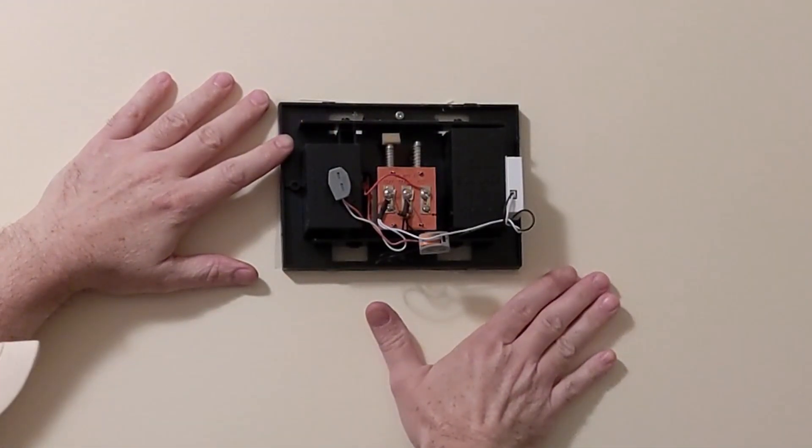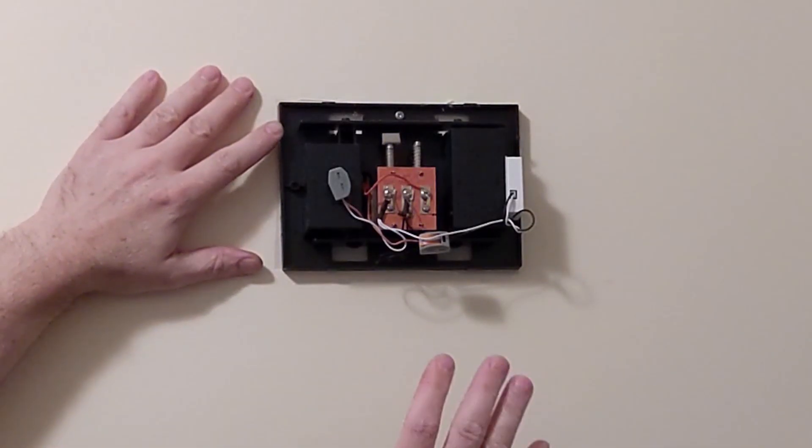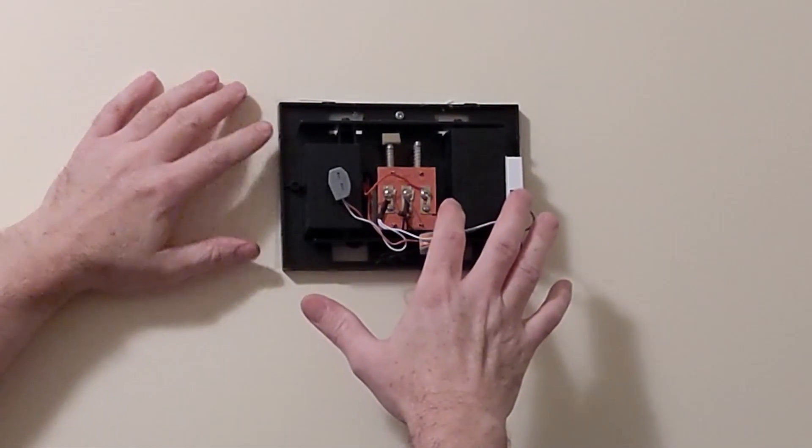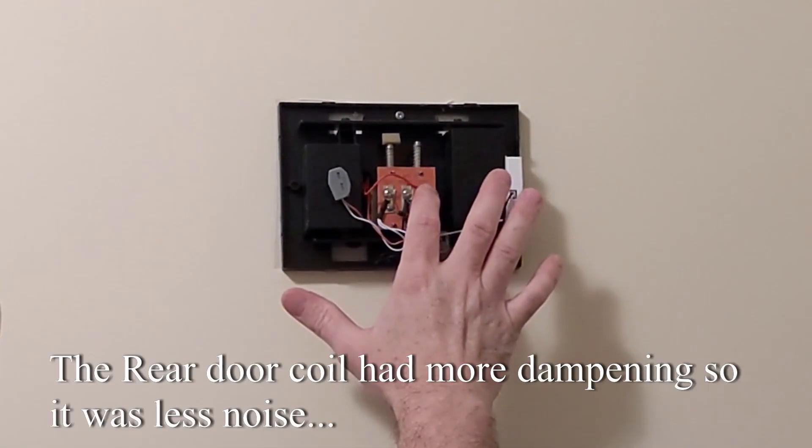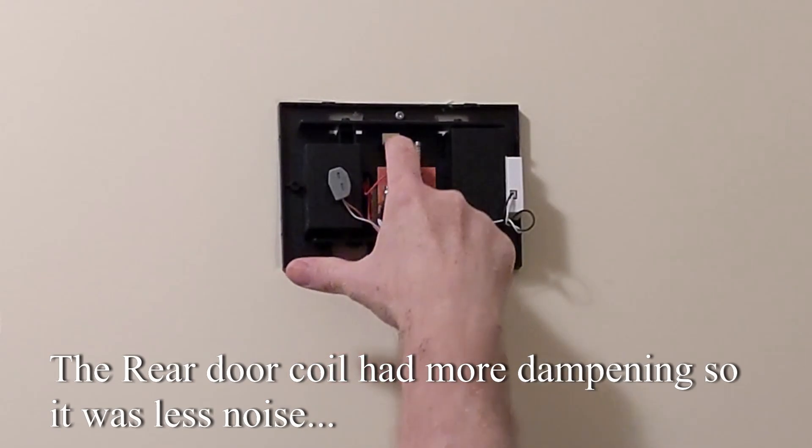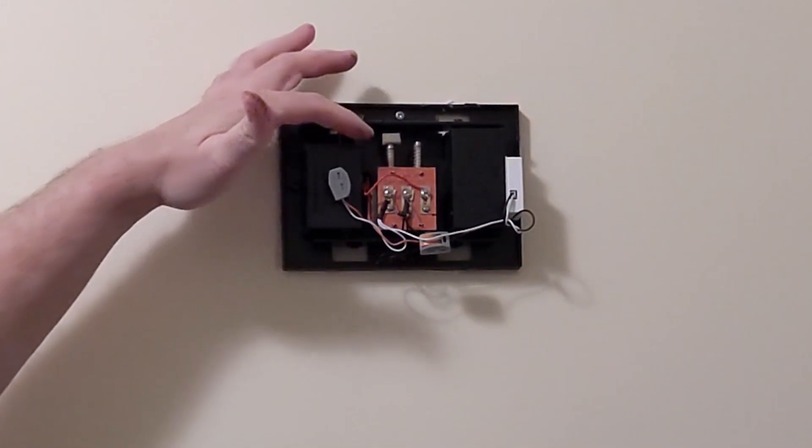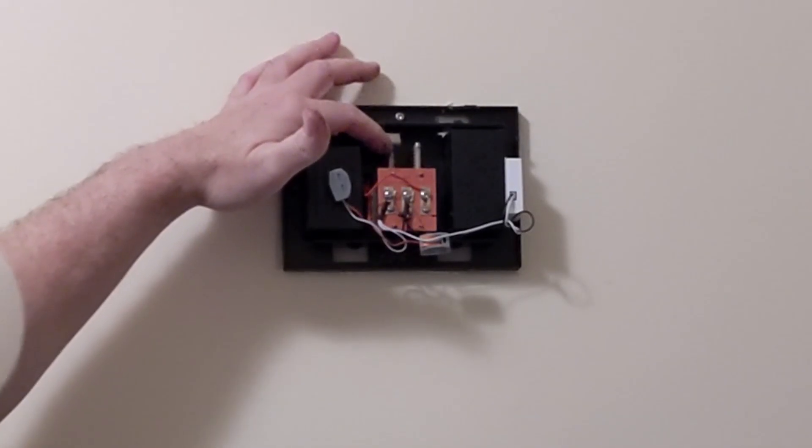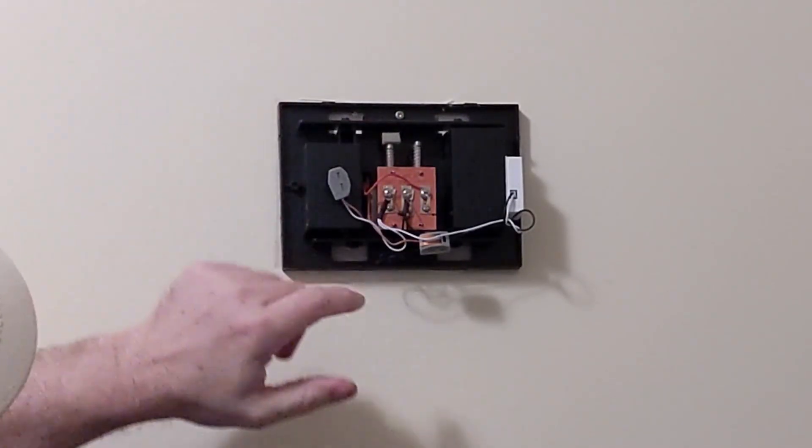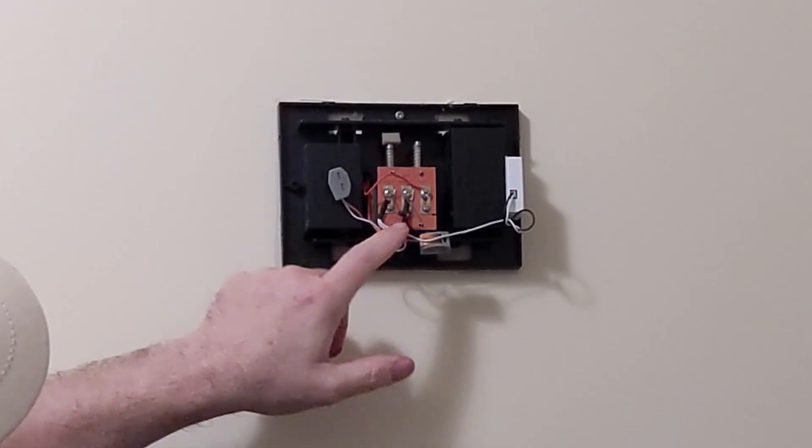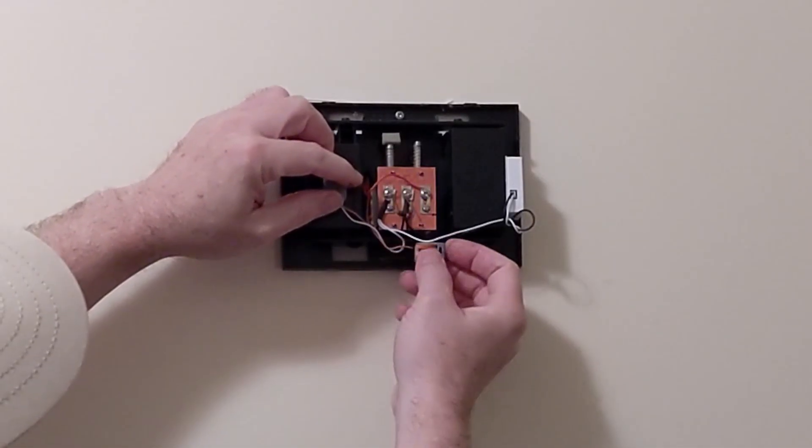On this wall, the hum was just driving me crazy. It was just loud. I actually moved the doorbell from the front door to the rear door because it is a little bit more dampened here. But I'll show you the difference that it makes just to put a 10 ohm resistor across where I got it tied in here.